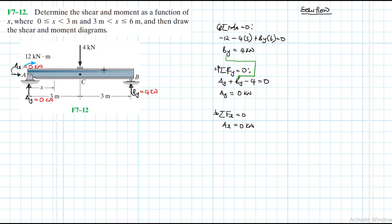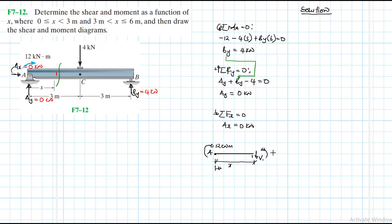We have two intervals: interval one from 0 to 3, and interval two from 3 to 6. We are moving from A towards B. Let's make our first section in interval one. We draw that portion — point A is there, we have a moment of 12 kilonewton meters, and the length is x. This point is labeled 1, so we have V1 and moment M1.